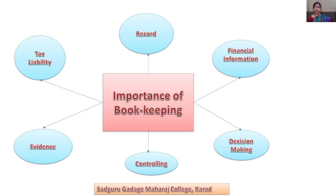The next point is evidence: a businessman needs financial evidence to be produced in the court of law in case of any dispute, and accounting records can be presented for this purpose. The next point is tax liability: bookkeeping is useful to find out tax liabilities, for example income tax, property tax, GST, etc.